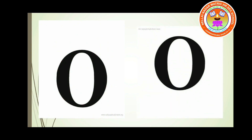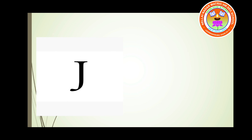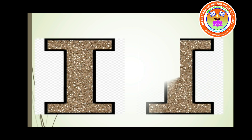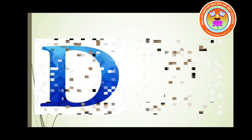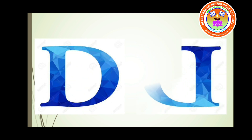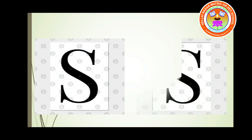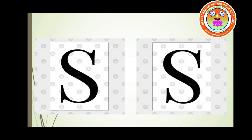Alphabet J won't look the same — it will be different when it turns to half turn. Alphabet I will look the same. Alphabet D won't look the same. The last alphabet, S: it looks the same when rotated to half turn.